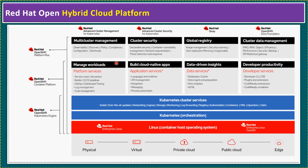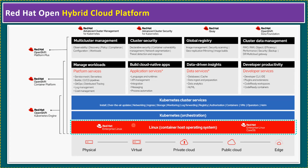As we are aware, Red Hat OpenShift has three editions: OpenShift Kubernetes Engine, OpenShift Container Platform, and OpenShift Platform Plus — all with advanced features. Whenever we plan to run an enterprise-grade Kubernetes platform like OpenShift, we require a Linux Container Host Operating System. This OS can be either Enterprise Linux or Enterprise Linux CoreOS.